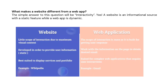What makes a website different from a web app? The answer is interactivity. A website is an informational source with a static feature, while a web app is dynamic. A website has a little scope of interaction due to maximum visual content, whereas a web application has more scope of interaction as it is built for getting user responses. A website is developed to provide the user with specific static information.